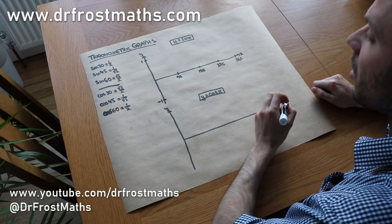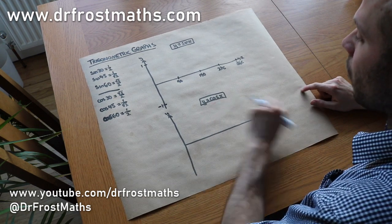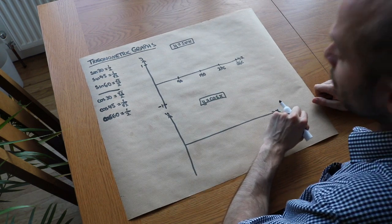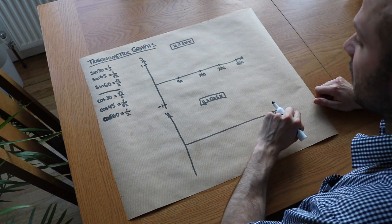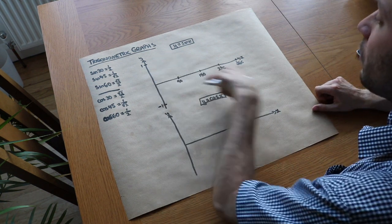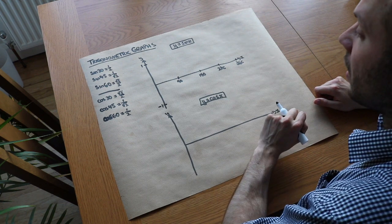In this video we're going to be looking at trigonometric graphs, in particular how you sketch y equals sine of x and y equals cos of x. We're not going to look at y equals tan of x in this particular video because it's not in the GCSE syllabus. We're also not going to see how we can use these graphs to solve trigonometric equations. We'll look at that in another video.